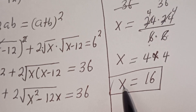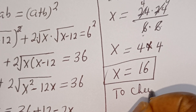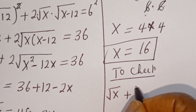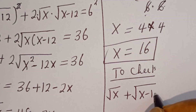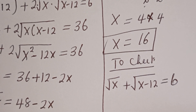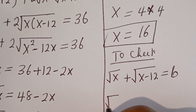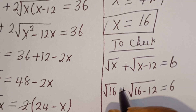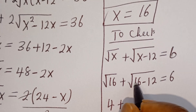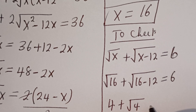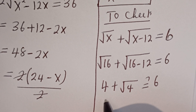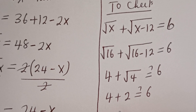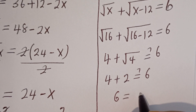We can check to confirm if this answer is right or wrong. To check, we substitute into the original equation: square root of x plus square root of x minus 12 is equal to 6. When x is 16, we have square root of 16 plus square root of 16 minus 12 is equal to 6. Square root of 16 is 4, and square root of 4 is 2, so 4 plus 2 equals 6, which is true.